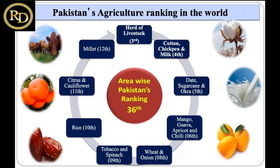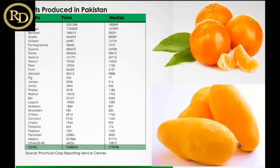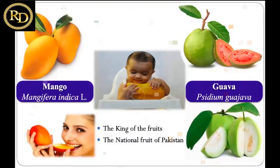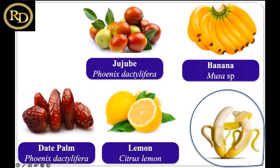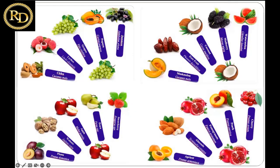Pakistan is the ninth largest producer in some categories, the eleventh largest in citrus and cauliflower, and the twelfth in millet. Area-wise, Pakistan is the 36th largest country in the world. In fruit production, citrus is the top most important fruit crop, followed by mango, banana, apple, and so on. Mango is believed to be the king fruit and is the national fruit of Pakistan — the summer national fruit — while guava is the winter national fruit. We also have banana, date palm, lemon, and other fruit crops grown from northern to southern areas across five provinces.